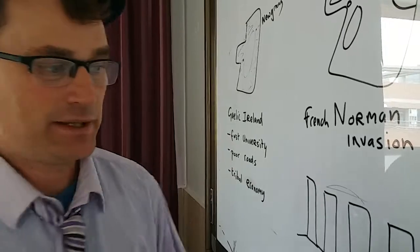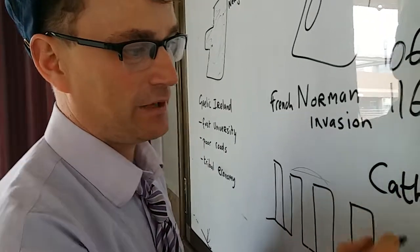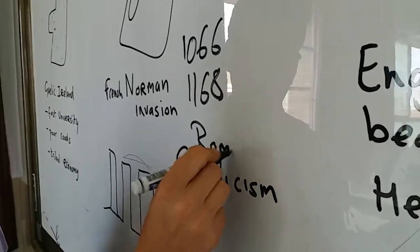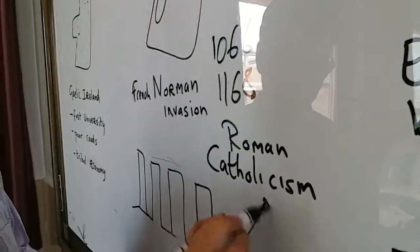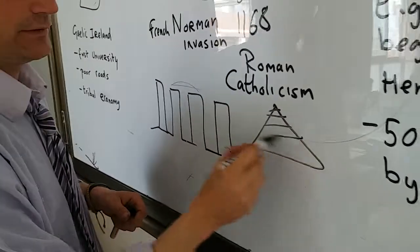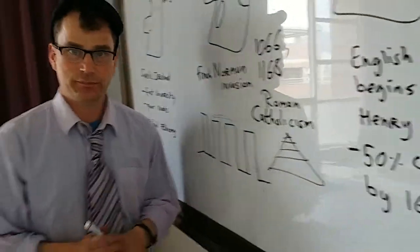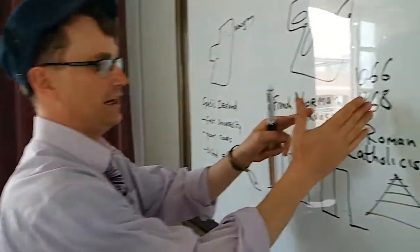And what do the French bring? Well, the French bring this religion called Catholicism, which comes from Rome. So now, it's a pyramid, and the priests are not allowed to get married.